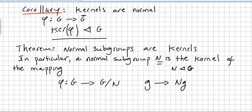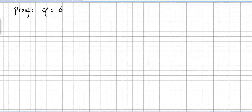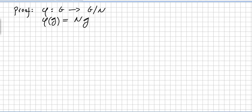This mapping takes g to the coset N times g. The proof is straightforward. We map G into the factor group G by N, where phi of g equals N times g. This is usually called the natural homomorphism from G to G by N.